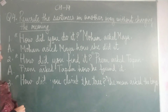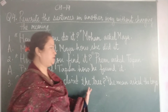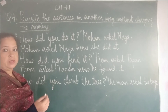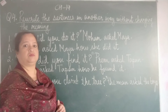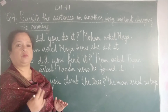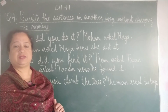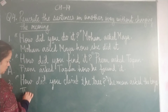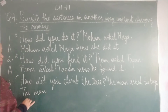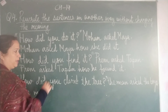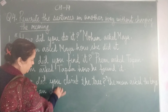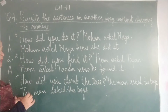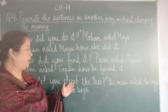Now let us have a look at the third one: 'How did you climb the tree? The man asks the boys.' So again if you notice, the man is asking the boys something and whatever he is saying is written in between inverted commas. But when we change the sentence from the direct to the indirect speech, we remove the inverted commas. So the man is asking the boys. The man asked the boys how they climbed the tree.